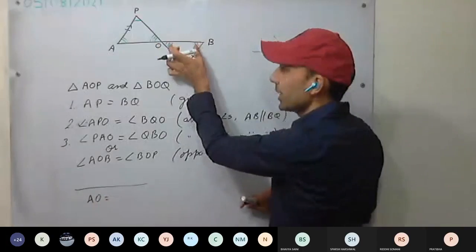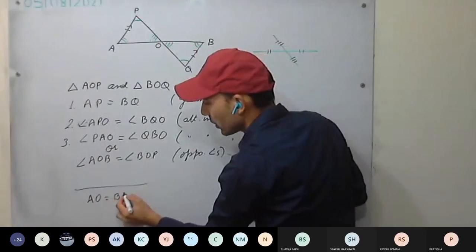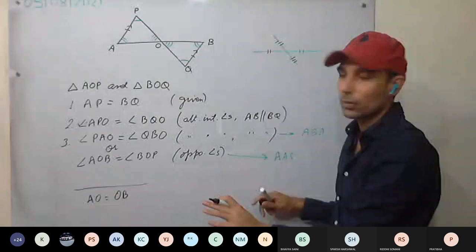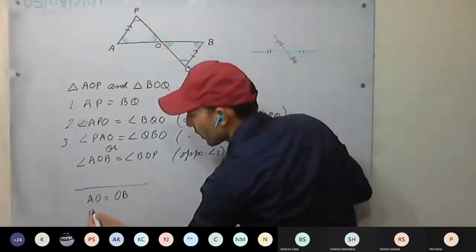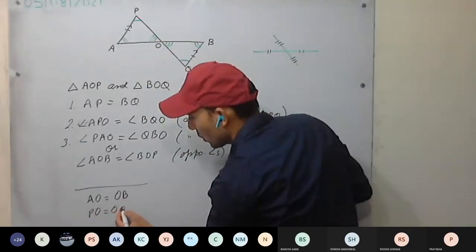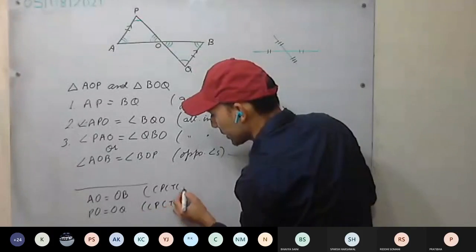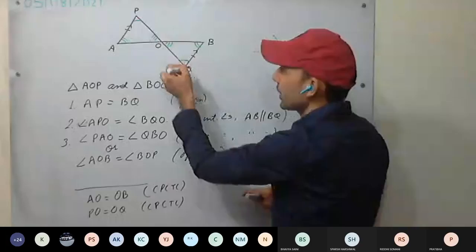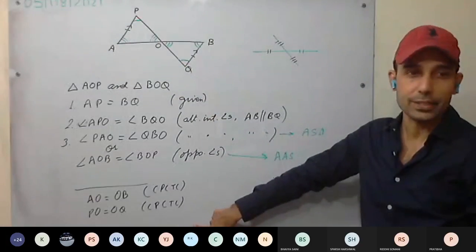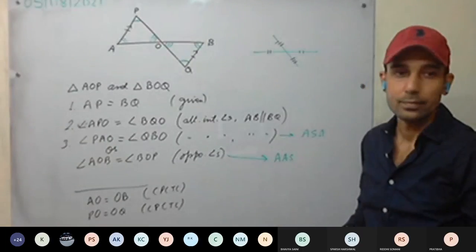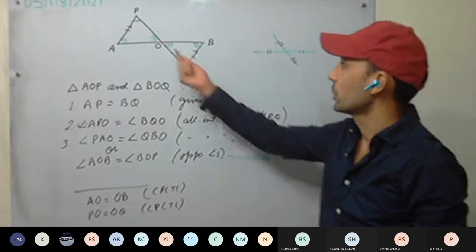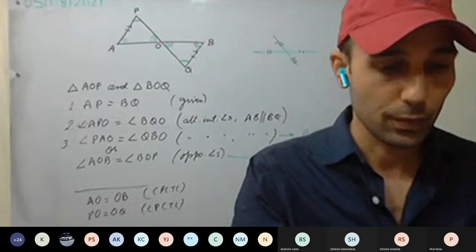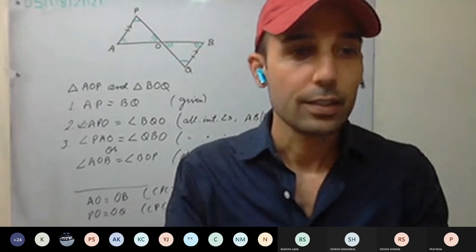AO equals OB, and PO equals OQ — by CPCTC. Since both the triangles are congruent, therefore AO equals OB and PO equals OQ. As they are equal, it means AB and PQ bisect each other. O is the midpoint of both the lines. Is this clear? This question is clear. Anyone have doubt in 9th? Then try the 10th one. Everyone try the 10th one.